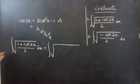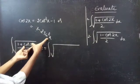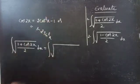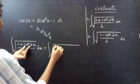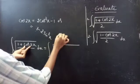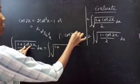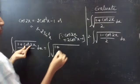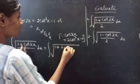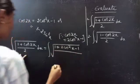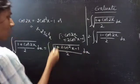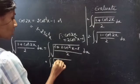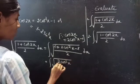Let's consider cos 2x equals 2cos²x minus 1. So we replace cos 2x with 2cos²x minus 1. We get the integral of square root of (1 plus 2cos²x minus 1) divided by 2, dx. The plus 1 and minus 1 cancel, so this equals the integral of square root of (2cos²x divided by 2), dx.